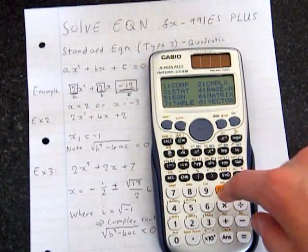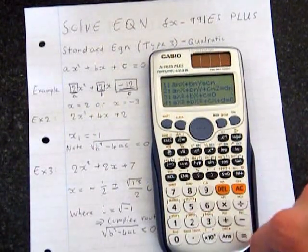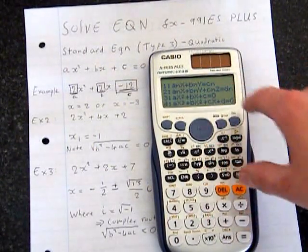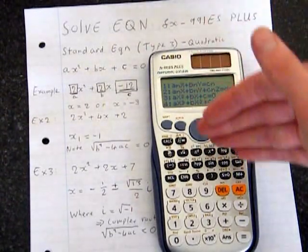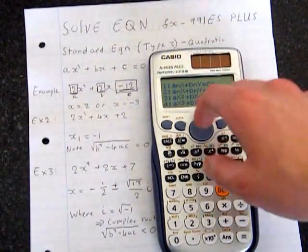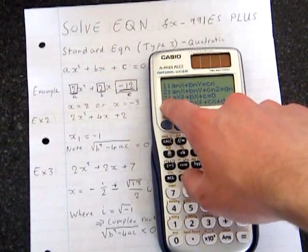To access it, you press mode, followed by 5, and then this puts up this menu that shows you all the different types of equations that the calculator can solve. If we choose option 3,